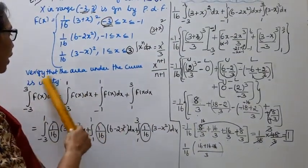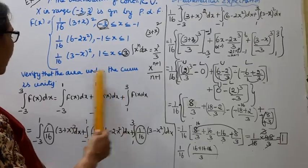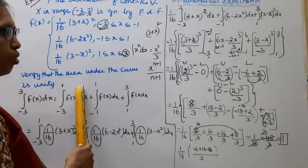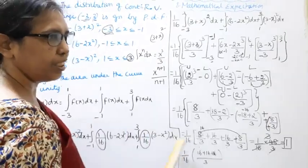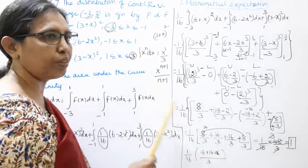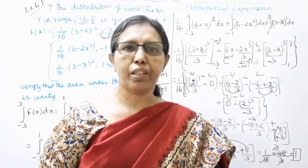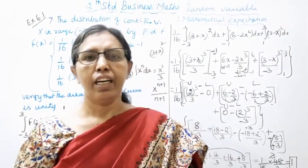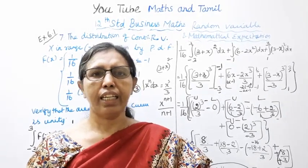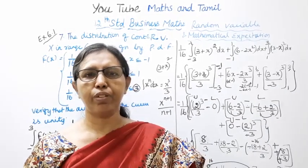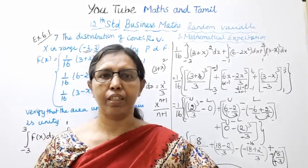Therefore, verify that the area under the curve is unity — the answer is 1, confirming unity. This channel helps you to get 100 marks. Subscribe and click on the bell button.